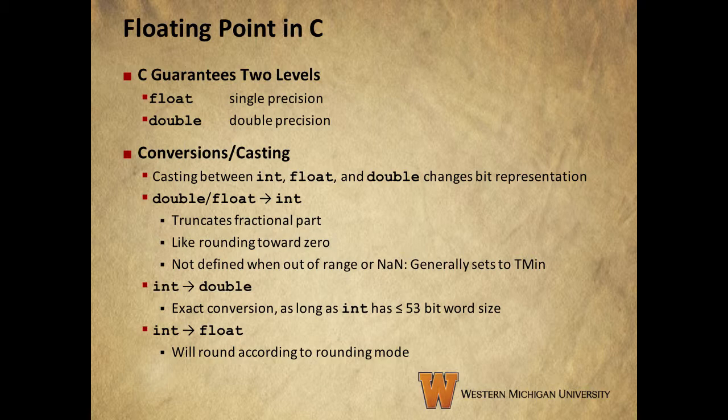Also, keep in mind that casting between int, float, and double types changes the bit representation. Going from a double or float to an int truncates the fractional part. Remember that ints represent whole numbers only — it's effectively like rounding toward zero. When we have float or double values that are out of range or not a number, thus undefined, C will generally set the value of the int to the minimum possible two's complement number.